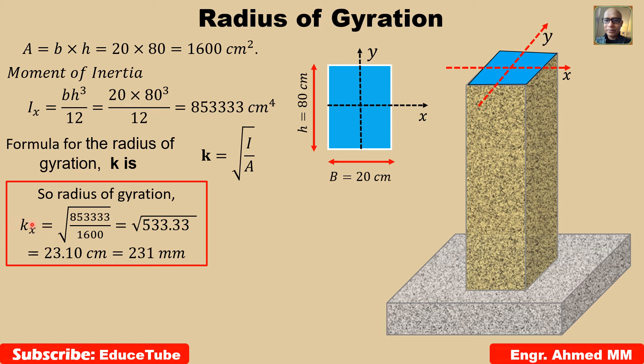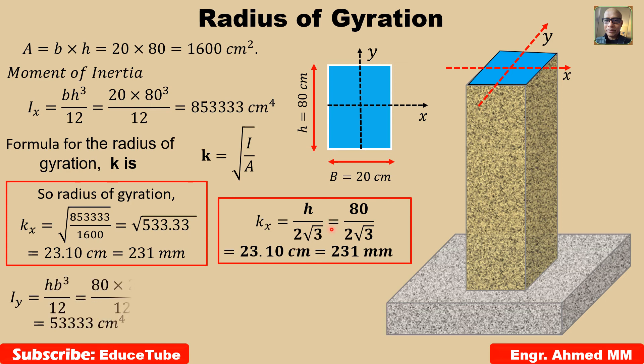Again, this kx, we can find using that simple formula: h divided by 2 square root of 3. We got the same value.